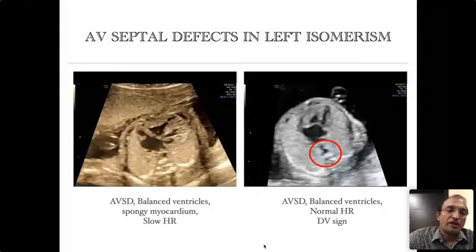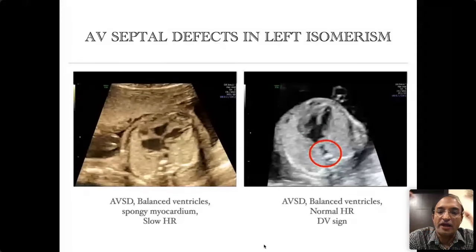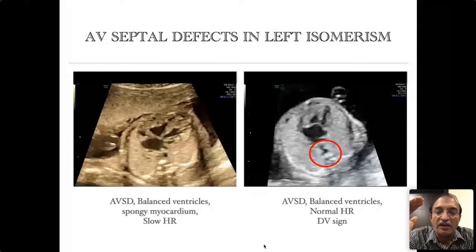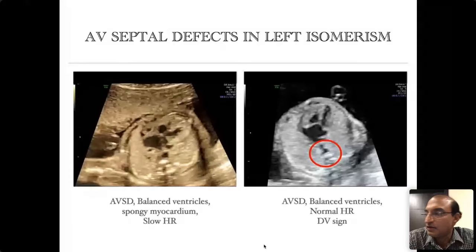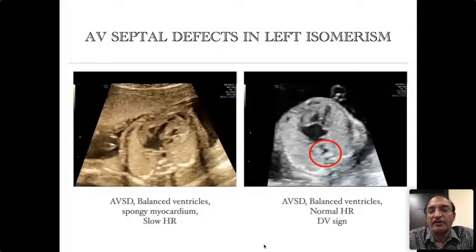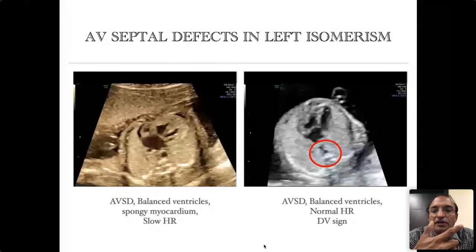It is very important to distinguish between AV septal defect occurring in different settings. Please distinguish between the balanced AV septal defect with equal-sized ventricles seen in trisomy 21 versus the AV septal defect seen in isomeric or heterotaxy hearts, in which you get either an unbalanced AV septal defect or the picture with interrupted IVC demonstrated by the double vessel sign.